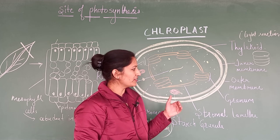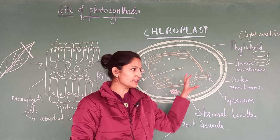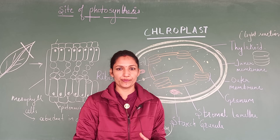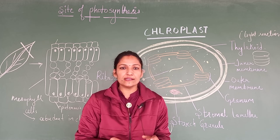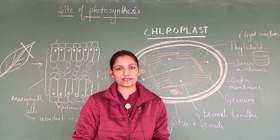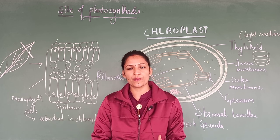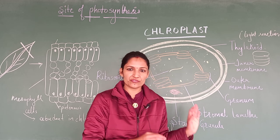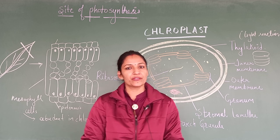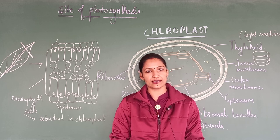Thylakoids are the site for the light reaction, that is the breaking of water molecules into oxygen and proton atoms. Those protons will be taken up further by reductase enzymes present in the matrix, and the process will continue. So, there is a clear-cut division of labour in the chloroplast — different structures are involved in different processes. In the structure of chloroplast, we get to know that the different steps of photosynthesis occur at different sites. Thank you.